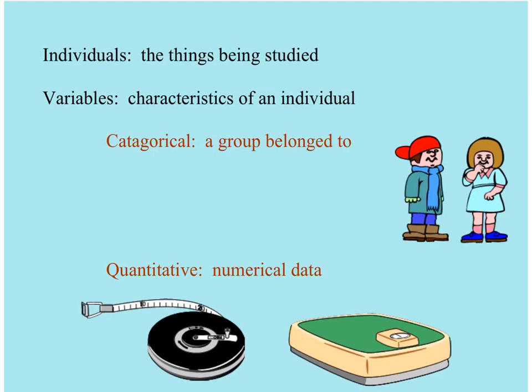Variables are classified in two ways. They're either a categorical or a quantitative variable. A categorical variable puts you into a group. You can see this little boy and girl I put here because, of course, gender is a categorical variable. Eye color, favorite food - these are all things you might be asked that put you into a group of people or a category.